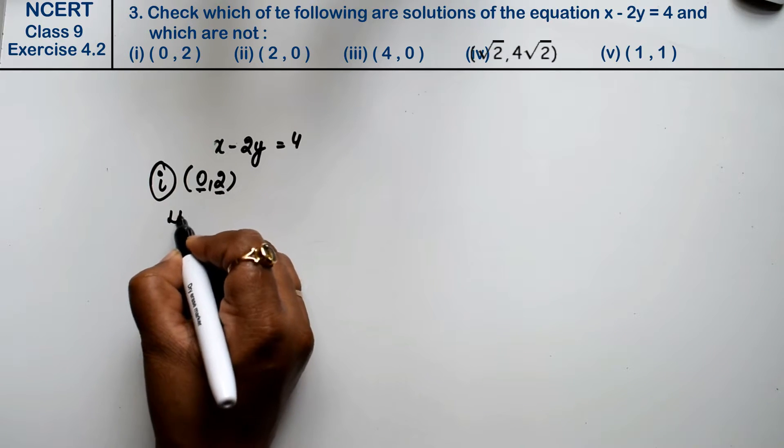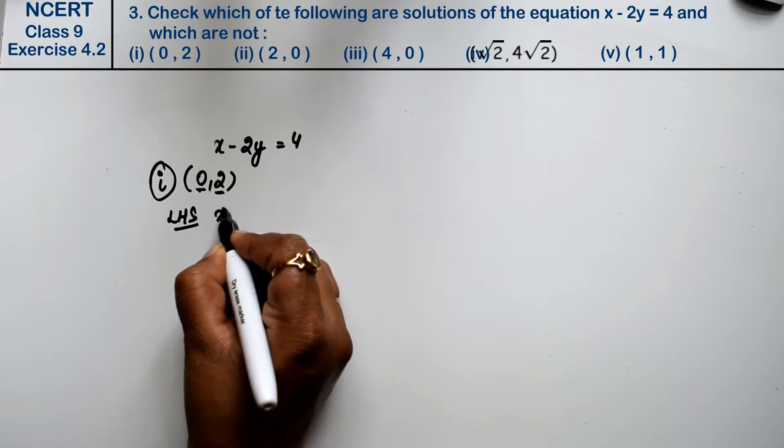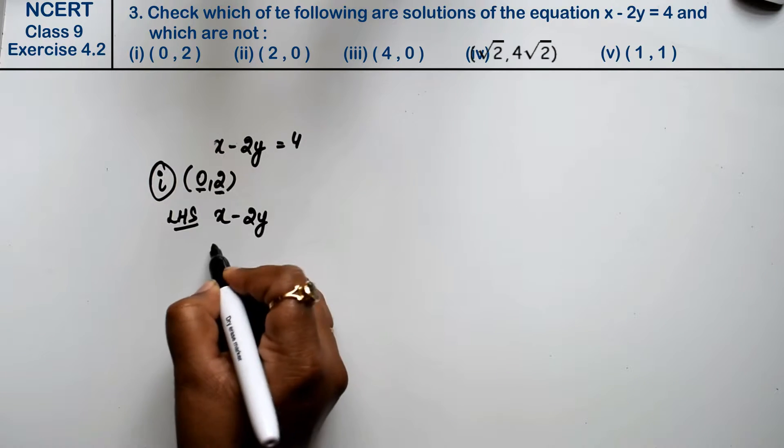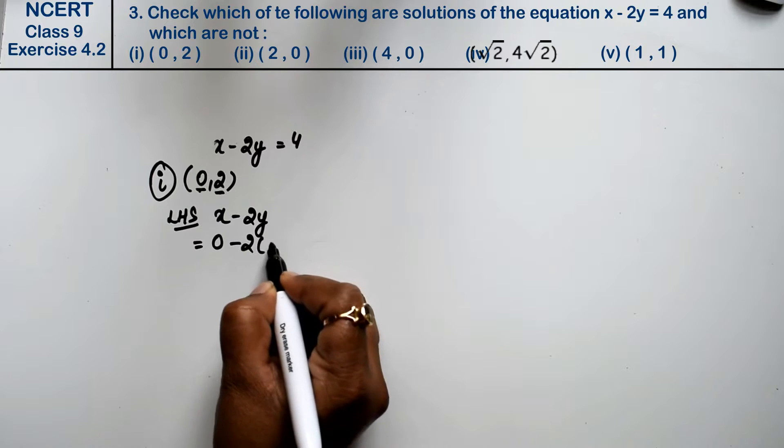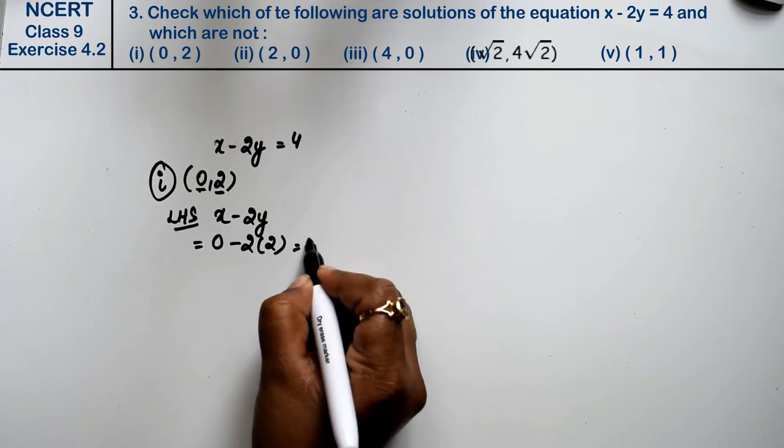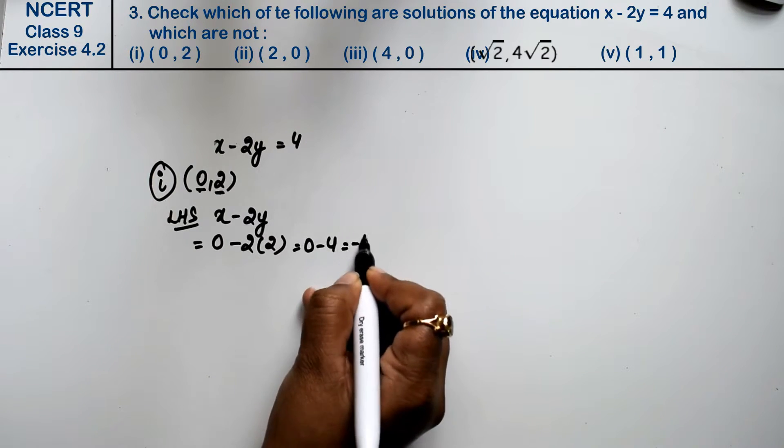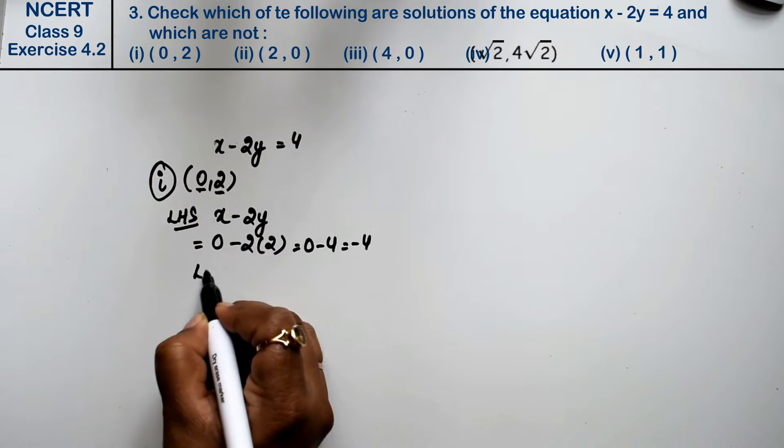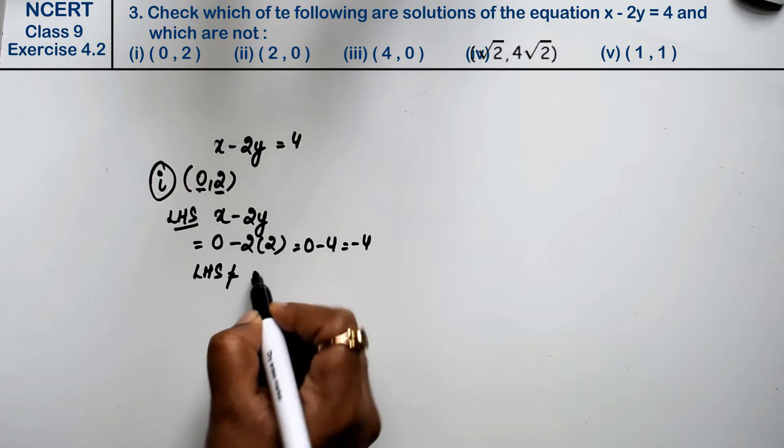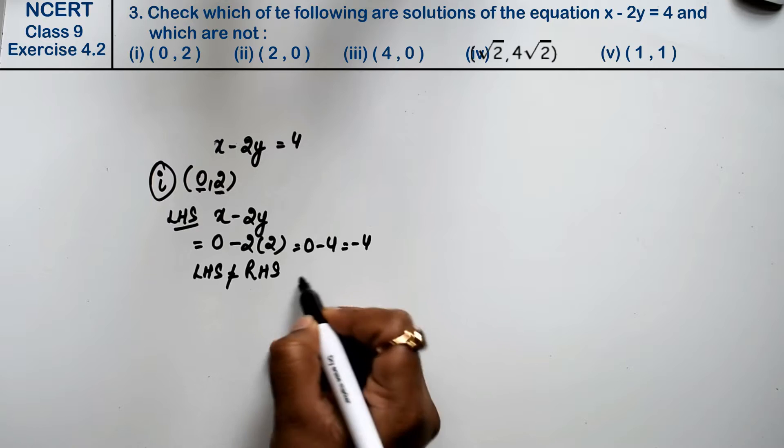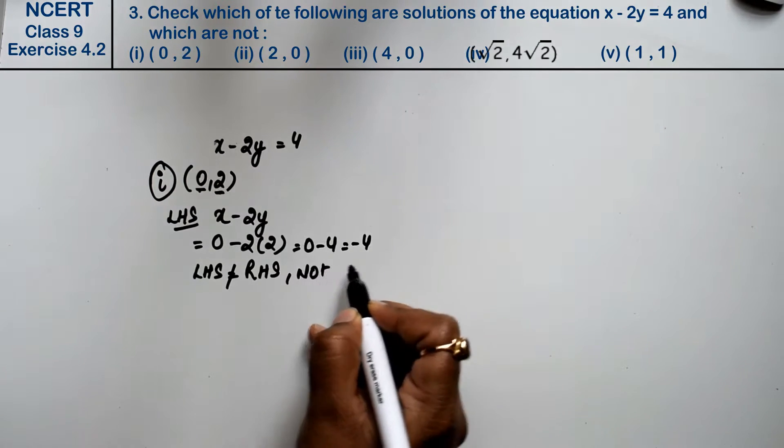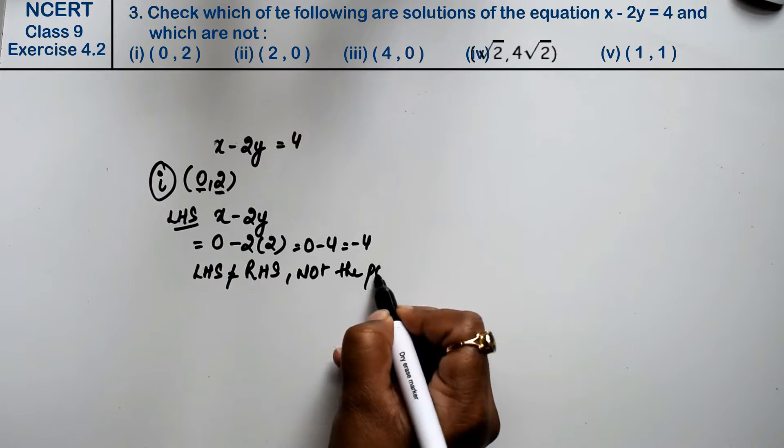Let's see. Left-hand side equation is x minus 2y. x's value is 0 and y's value is 2, so 0 minus 4, that is minus 4. Left-hand side and right-hand side are not equal. Hence, not the point.